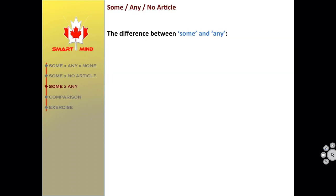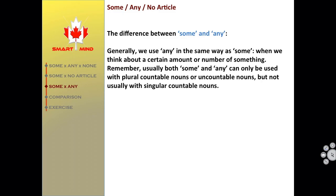The difference between some and any. Generally, we use any in the same way as some — when we think about a certain amount or number of something. Remember, usually both some and any can only be used with plural countable nouns or uncountable nouns, but not usually with singular countable nouns.